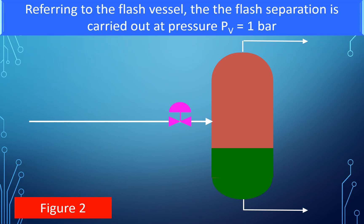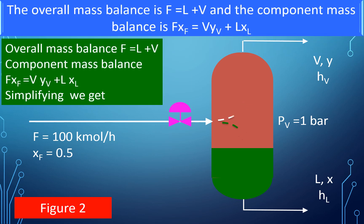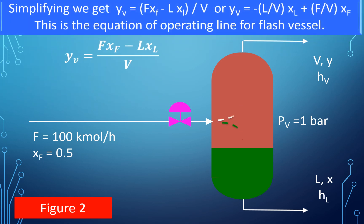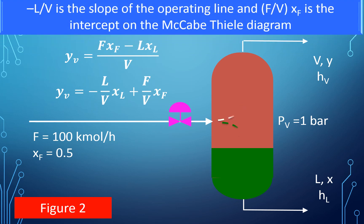Referring to the flash vessel in this figure, the flash separation is carried out at pressure PV = 1 bar. The feed rate is 100 kmol/hr and the feed concentration of methanol is Xf = 0.5. The overall mass balance is F = L + V and the component mass balance is F × Xf = V × Yv + L × Xl. Simplifying, we get: Yv = -(L/V) × Xl + (F/V) × Xf. This is the equation of the operating line for the flash vessel, where -L/V is the slope and (F/V) × Xf is the intercept on the McCabe-Thiele diagram.